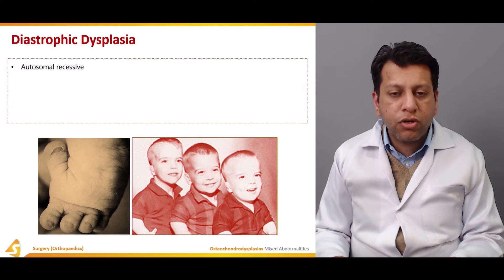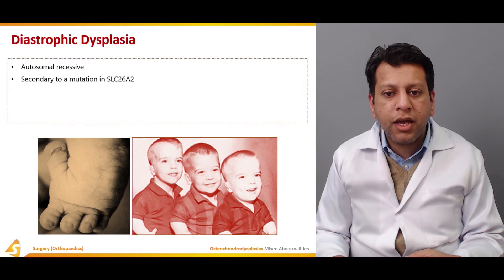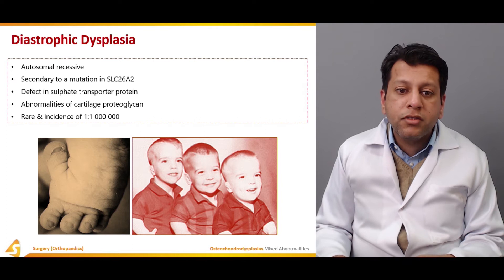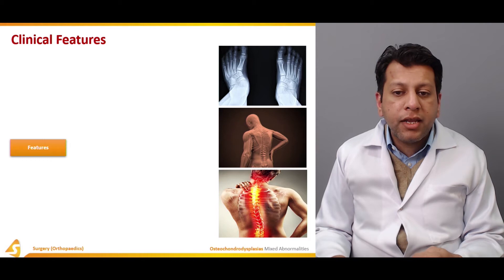Coming to diastrophic dysplasia: it is autosomal recessive and can affect any region of the bone — it is not specific to the physis, epiphysis, or metaphysis. It is connected to a mutation in the SLC26A2 gene, resulting in a defect in sulphate transport protein and abnormalities of cartilage proteoglycans as well. Its incidence is very rare, approximately 1 in 100,000.